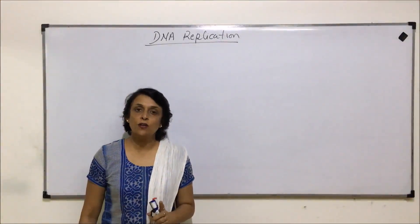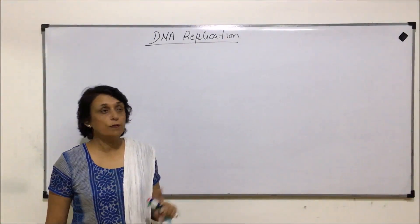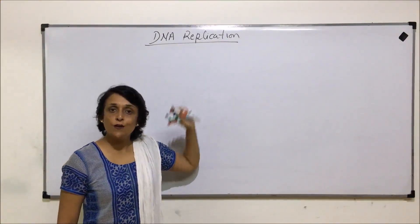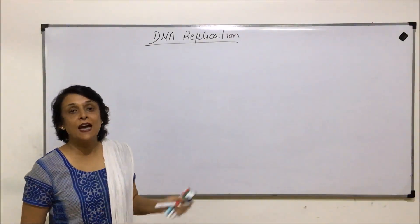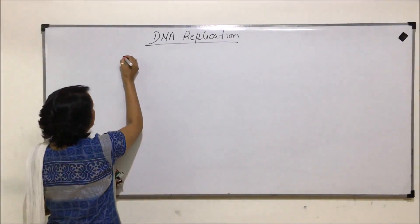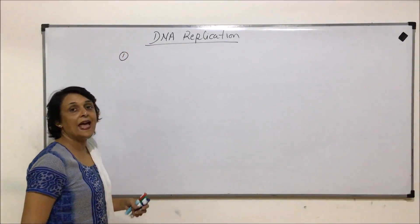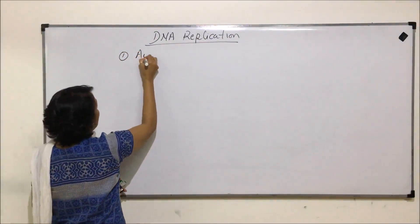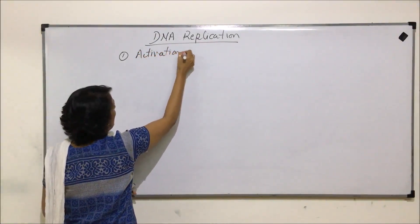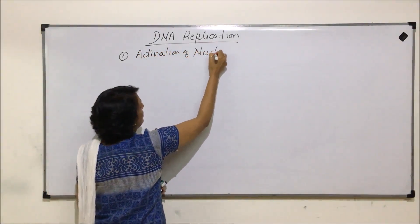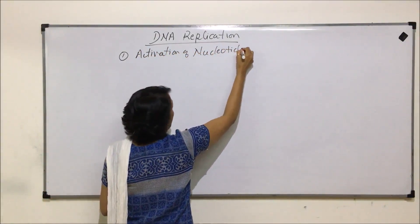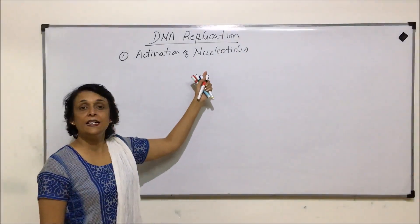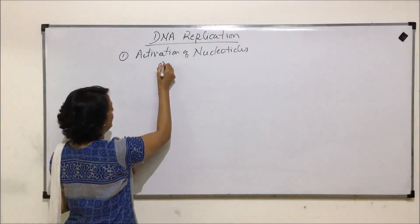In the previous video we talked about all the enzymes required for DNA replication. Now we are starting with the actual process. The first step is activation of nucleotides, and here we are talking of DNA nucleotides, which are of four types.